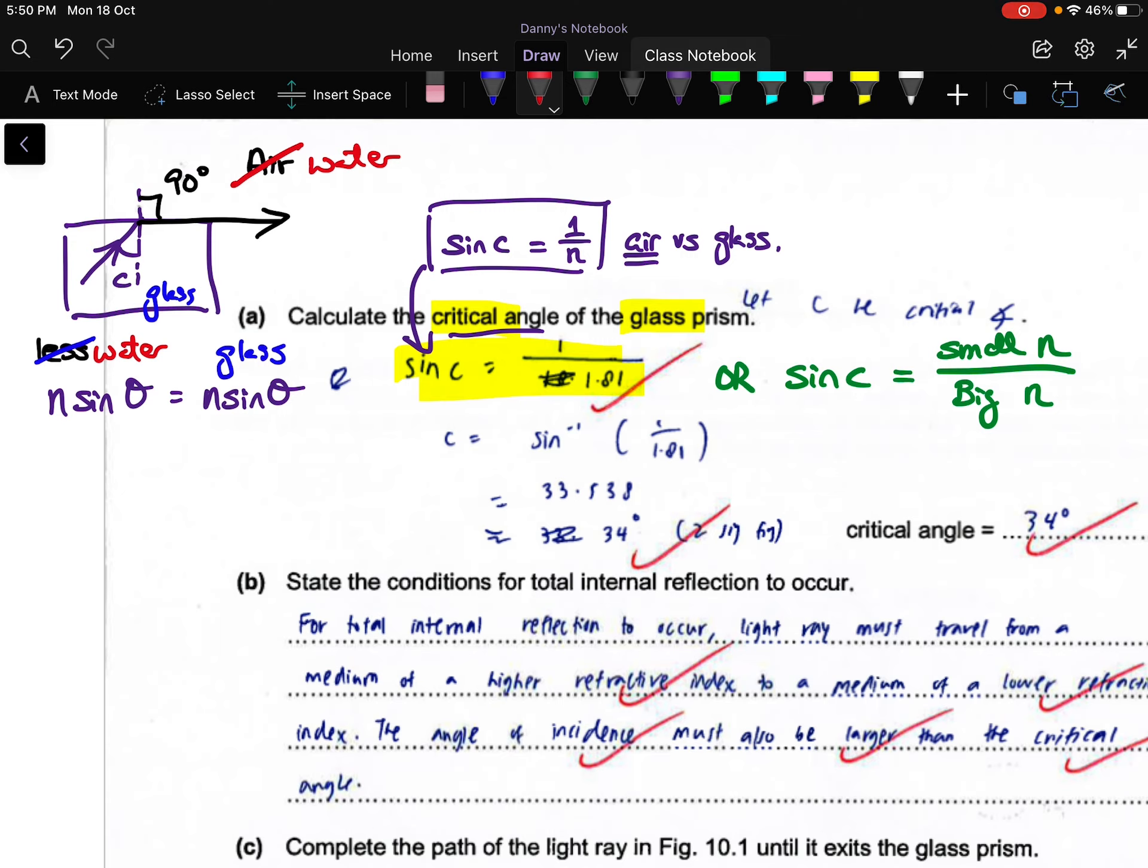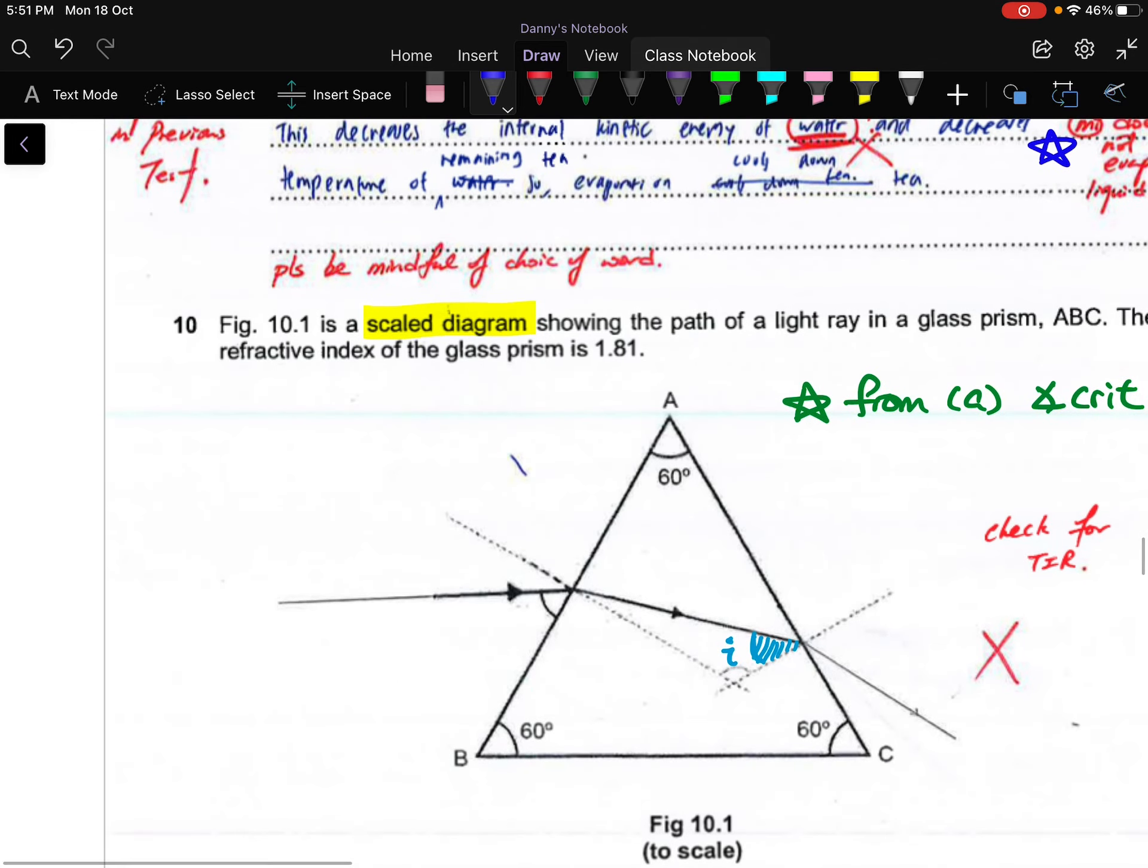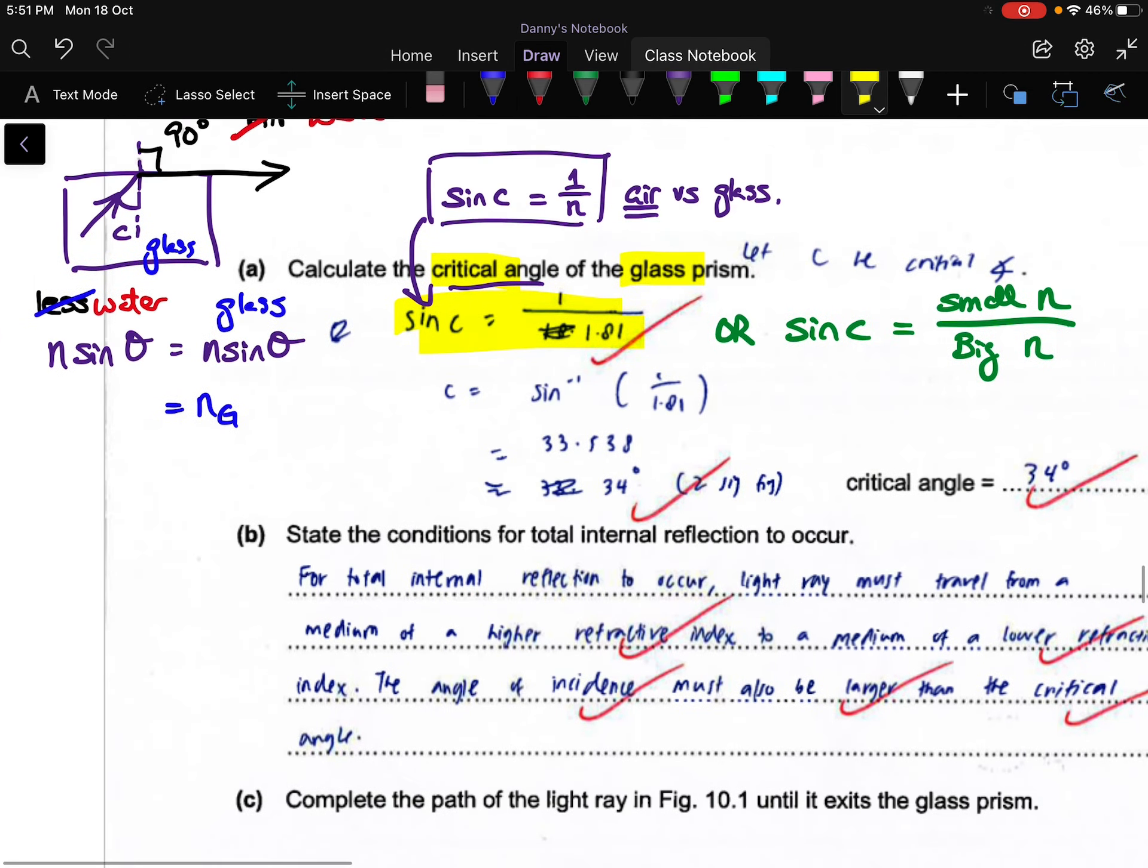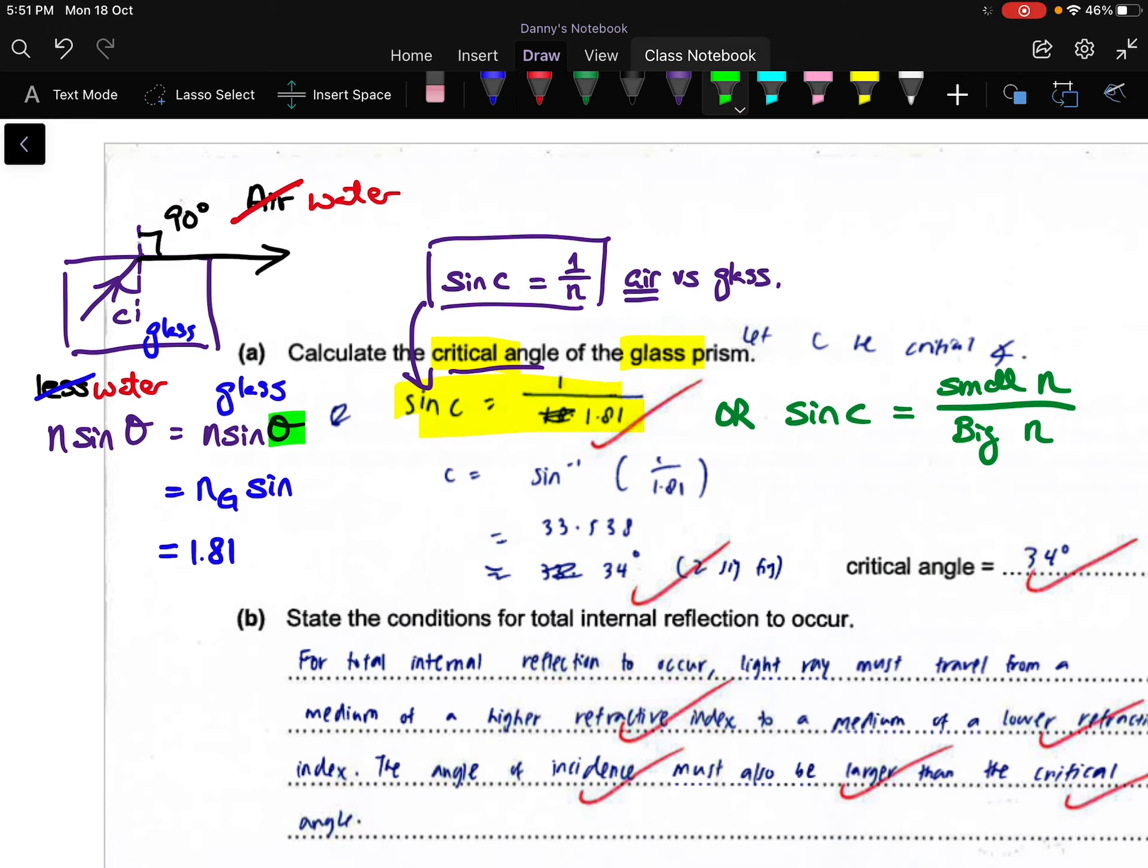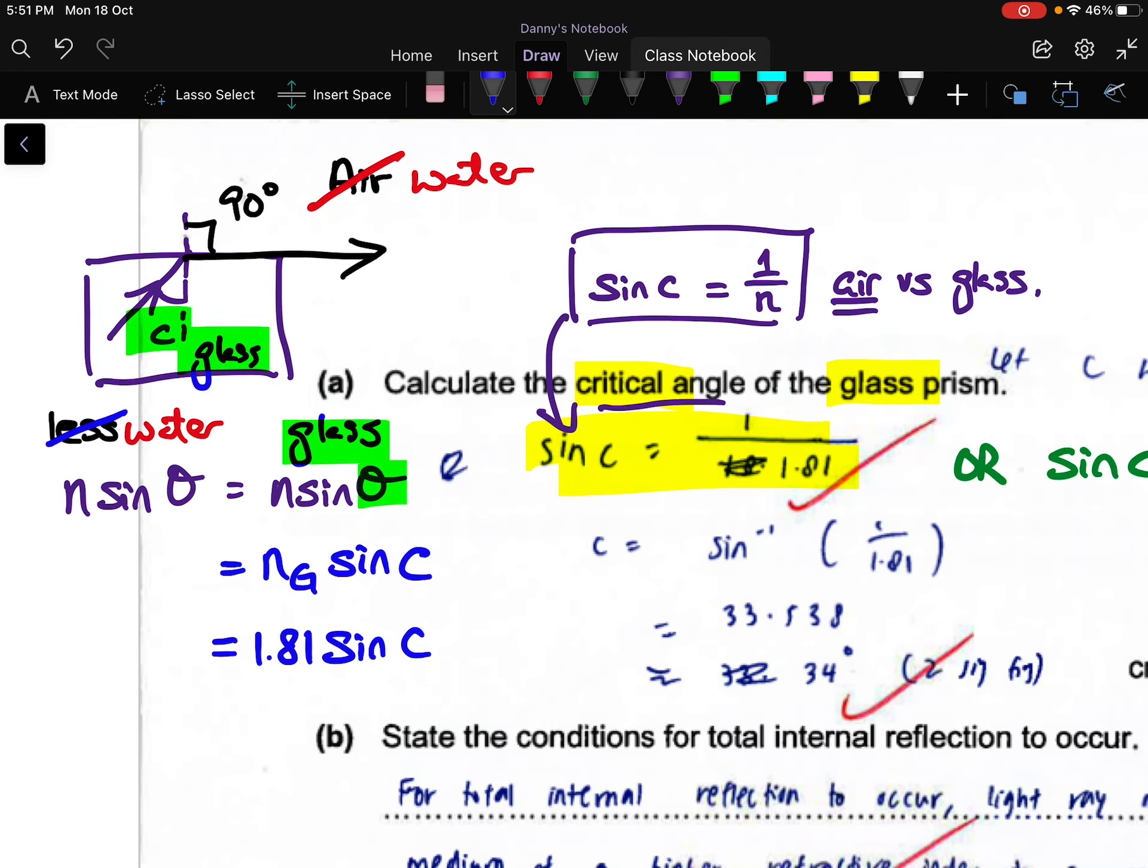The refractive index of the glass prism is given as 1.81, so nG will be 1.81, and it will be sin C. For our question, we didn't make it so hard that we give you water as the other medium, but rather we give you air. But in secondary four, we will up the difficulty and you will see water-glass boundary and things like that, or even oil-glass boundary.